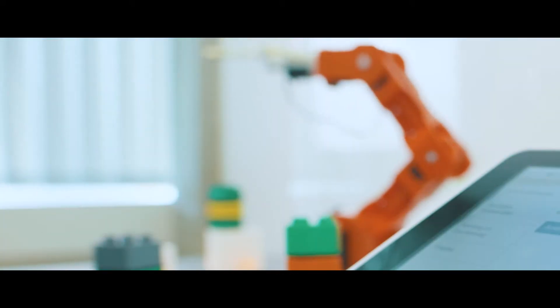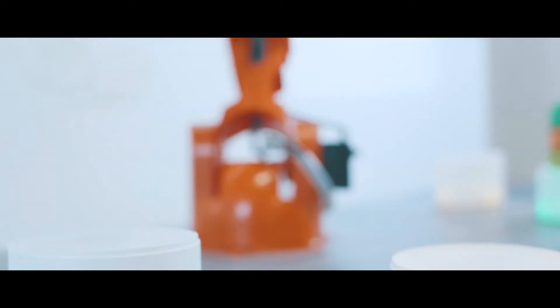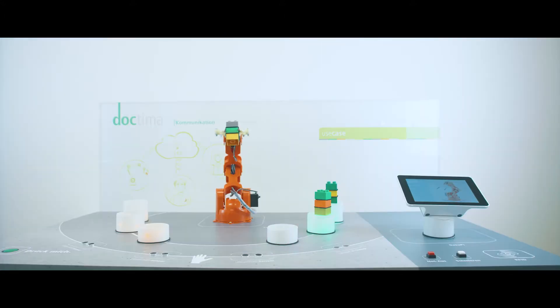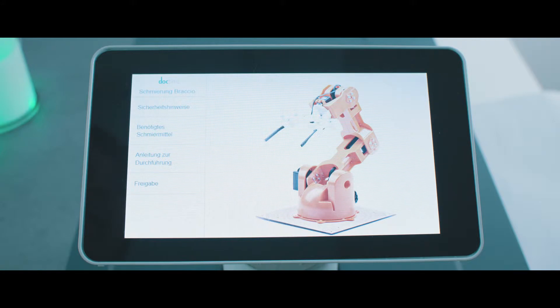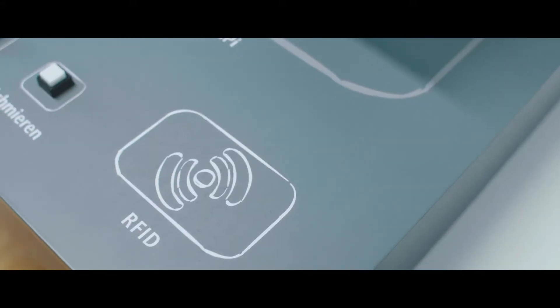The user can then notify the robot controls that the problem has been resolved using the tablet. The robot starts working again as is normally the case when servicing is required. A machine needs to be repaired as quickly as possible. Usually the service technician has to manually search through printed documentation or PDF files in order to find out how to resolve the issue.